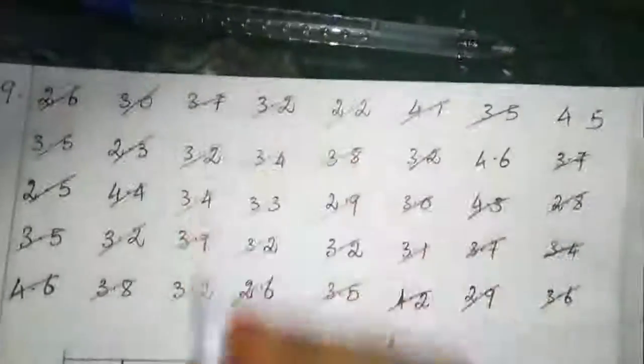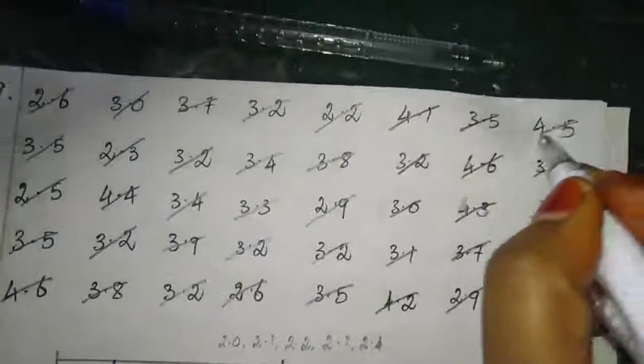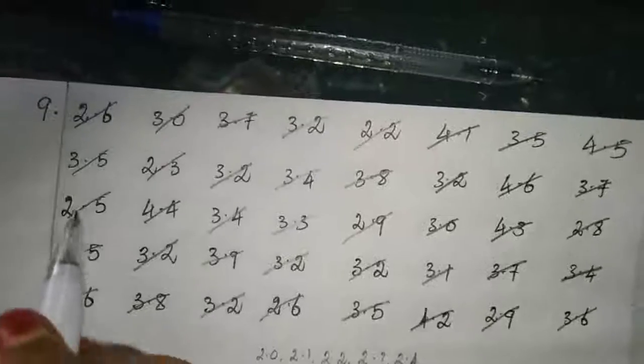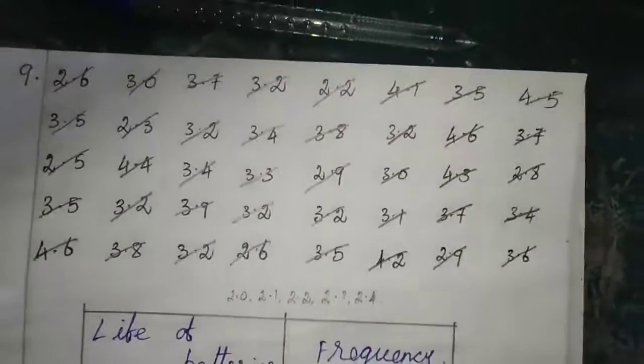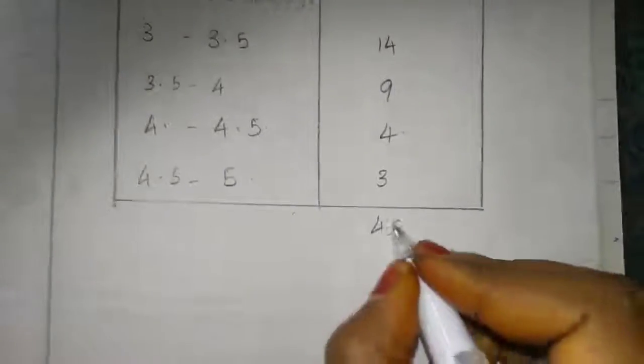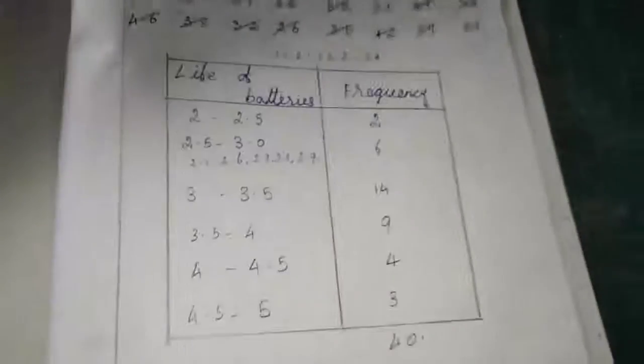Next one is 4.5 to 5. Counting, we have 3 only. If you add this fully you will get 40. This is the frequency distribution table. The exercise is completed.